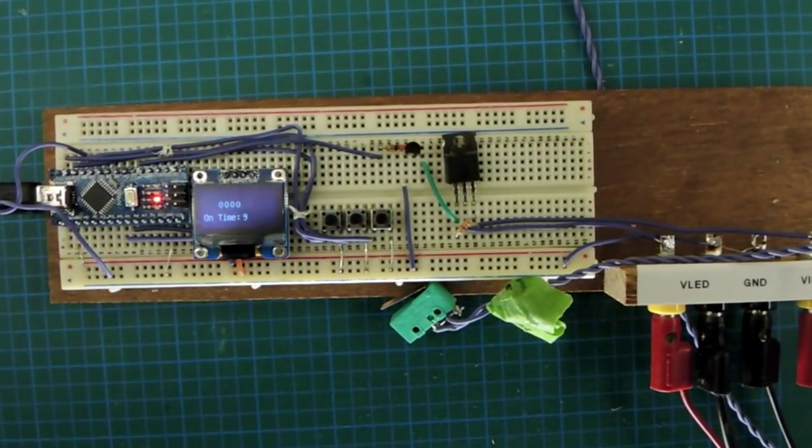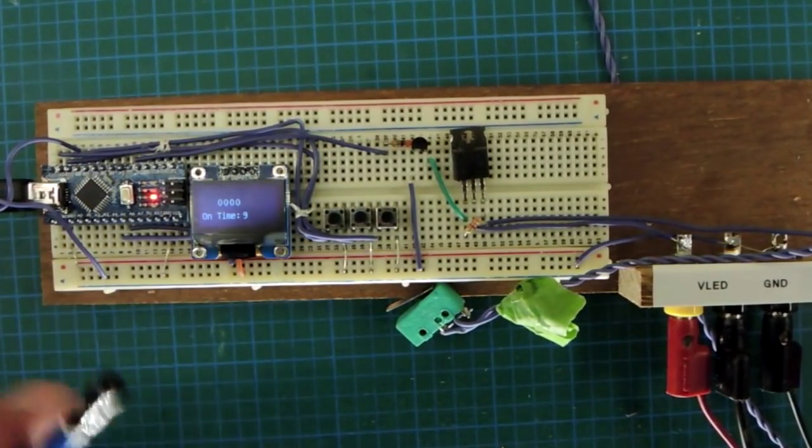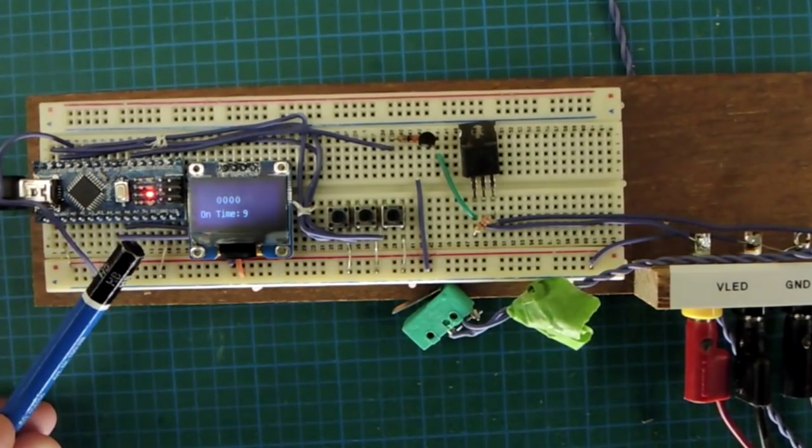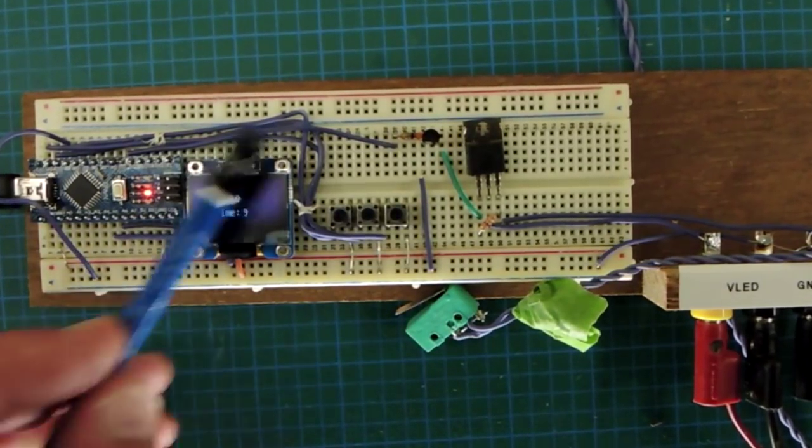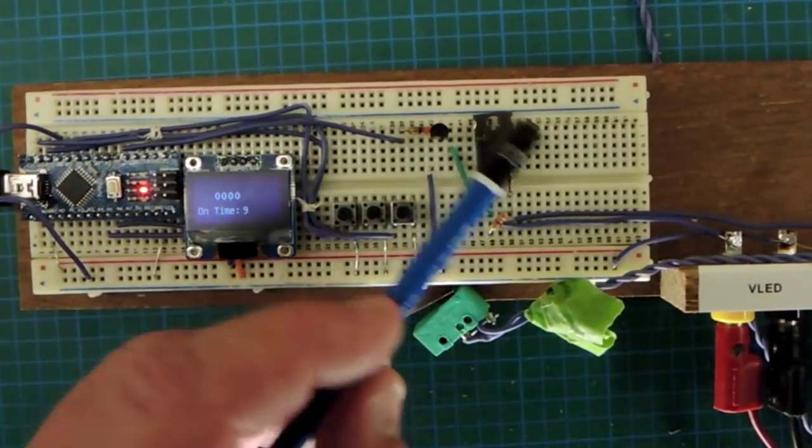Here's the control circuitry, all based upon an Arduino Nano. I think I paid about two dollars for a bag of these things. I can't believe how cheap they are, and they're incredibly useful for these little control circuit projects. A human interface, an OLED display with some buttons.